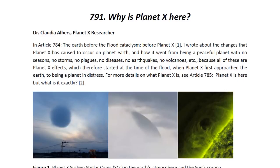In article 784 entitled The Earth Before the Flood Cataclysm Before Planet X, I wrote about the changes that Planet X has caused on Planet Earth and how it went from being a peaceful planet with no seasons, no storms, no plagues, no diseases, no earthquakes, no volcanoes, etc. Because all of these are Planet X effects, which therefore started at the time of the Flood, when Planet X first approached the Earth, to being a planet in distress. For more details on what Planet X is, you may look at article 785 entitled Planet X is Here.